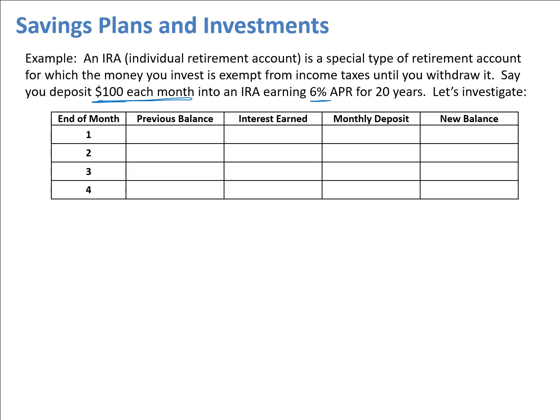Let's first look at just a few months to see how the process works, and then we'll look at calculating the full 20 years with a spreadsheet. We'll assume we deposit money at the end of each month. So our previous balance before any deposit is zero, the interest earned on zero is zero, and we make our monthly deposit at the end of the month — like when you get a monthly paycheck. Since it hasn't earned any interest yet, our new balance at the end of month 1 is $100.